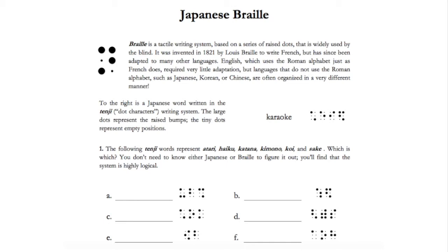English which uses the roman alphabet just as French does requires very little adaptation, but languages that do not use the roman alphabet such as Japanese, Korean or Chinese are often organized in a very different manner.